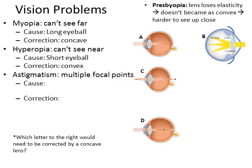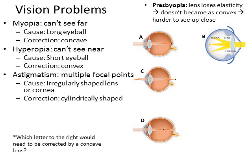A third problem is called astigmatism, where you have multiple focal points — this is what it would look like here. Light hits the retina in multiple places. The cause is an irregularly-shaped cornea. When light goes through the cornea and there's a small bump in one portion, that causes the light to be refracted to a different spot, giving us multiple focal points. The correction is cylindrically-shaped lenses that correct specifically for the location of the bump on the cornea, eliminating the extra focal points and getting them all to land in the same spot.